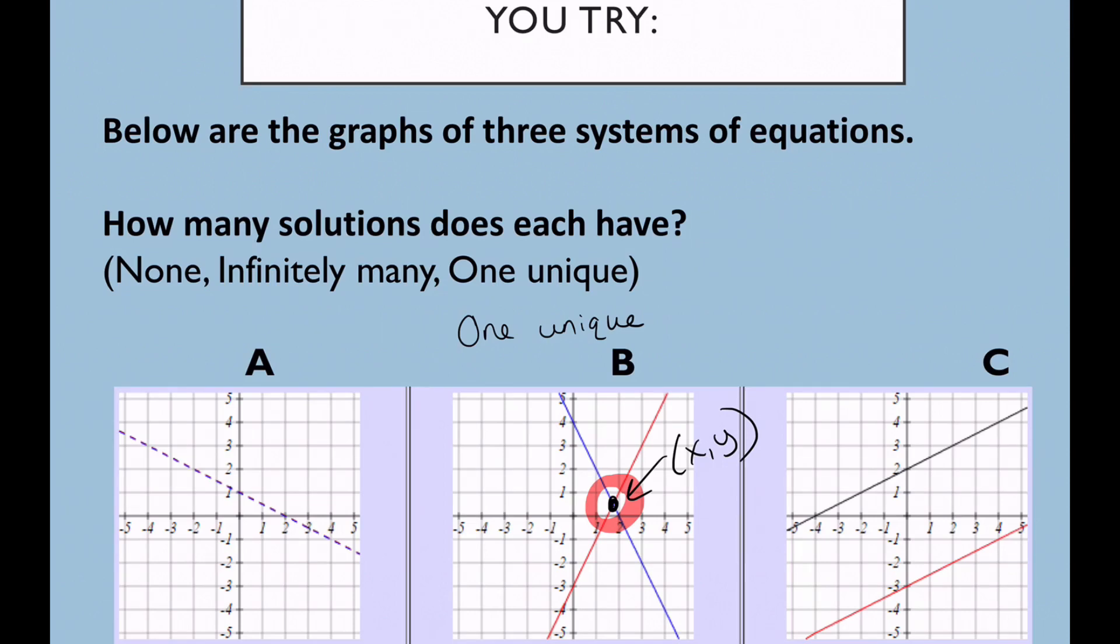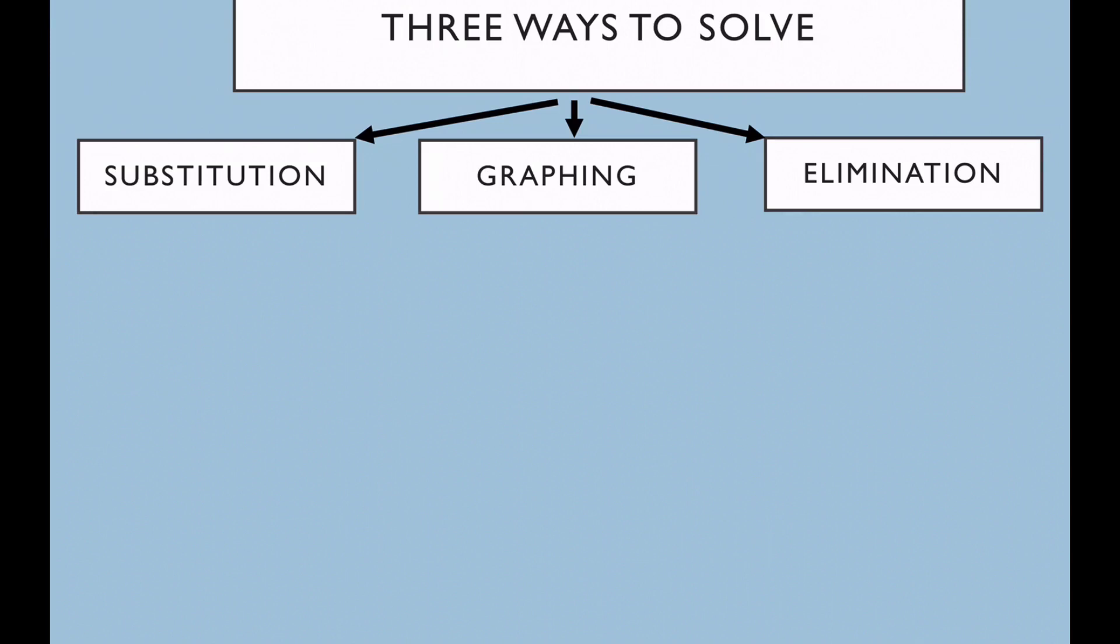C is going to have no solutions because as you can see they're parallel lines, they're never going to intersect. And then A is going to have infinitely many solutions and literally this means that it's the exact same line on top of each other.